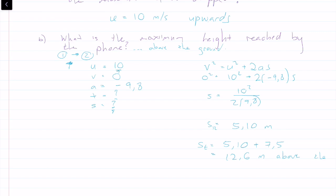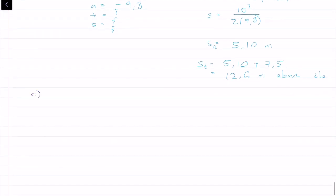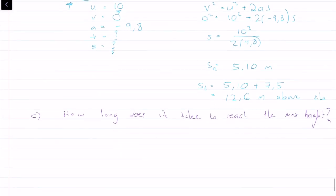Question C: how long does it take to reach the maximum height? Using the same uvats between points 1 and 2, I need to solve for time using v = u + at: 0 = 10 + (−9.8)t, so t = 10 ÷ 9.8 = 1.02 seconds.